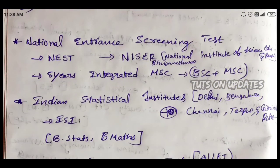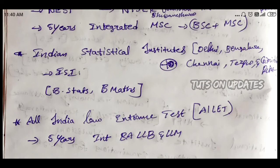Next is the National Entrance Screening Test, or NEST, for admission to the National Institute of Science Education and Research. After entering, you will complete an undergraduate degree. There is also the KVPY fellowship program, which supports science candidates. Next, the Indian Statistical Institute offers admissions for candidates interested in the Bachelor of Statistics and Bachelor of Mathematics programs.